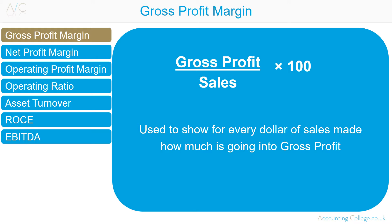Gross profit margin is useful for comparing year-on-year results, for comparisons with competitors of different sizes, and for comparisons against industry standards. In simple terms, the higher the gross profit margin, the better, with poor performance often being explained by sales prices being too low or costs being too high. Gross profit margin allows comparisons between organisations of different sizes. But a point to consider is that a larger organisation can get volume discounts, which may explain a lower gross profit margin for smaller organisations.